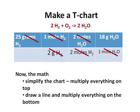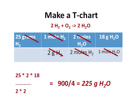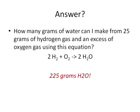Next, you can do the math. Simplify your chart, multiplying everything on the top, drawing a line, and multiplying everything on the bottom, which leaves you with the top divided by the bottom. And we have our answer: 225 grams of H2O.